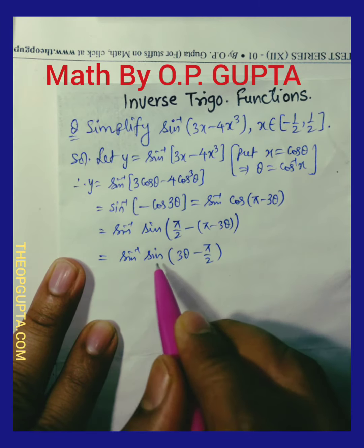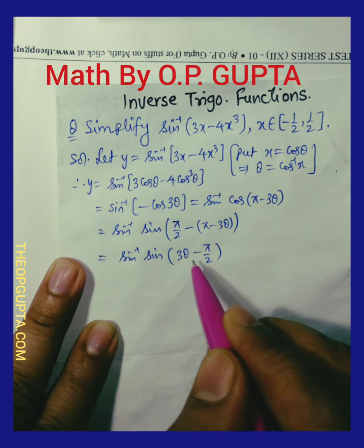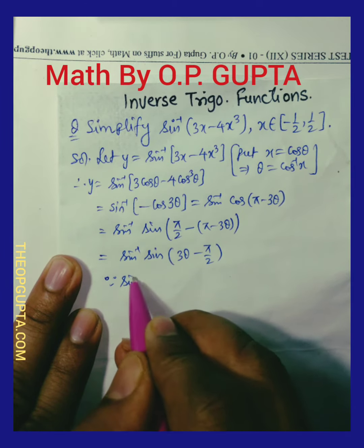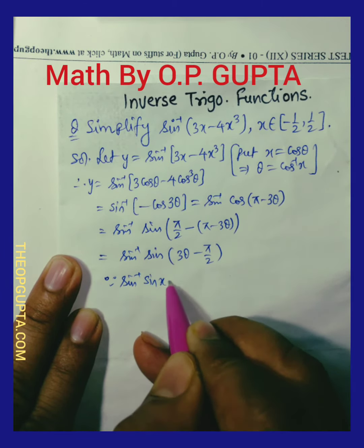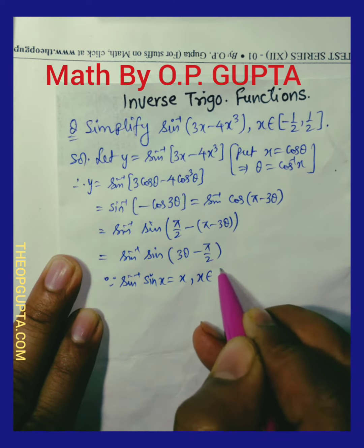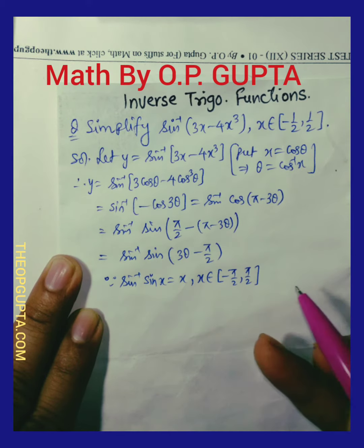Moreover, in the next step, this will be 3 theta minus pi by 2. Now let us check if sine inverse of sine x is equal to x or not. x must be belonging to the principal value branch range of sine inverse function. I am referring to this particular formula.